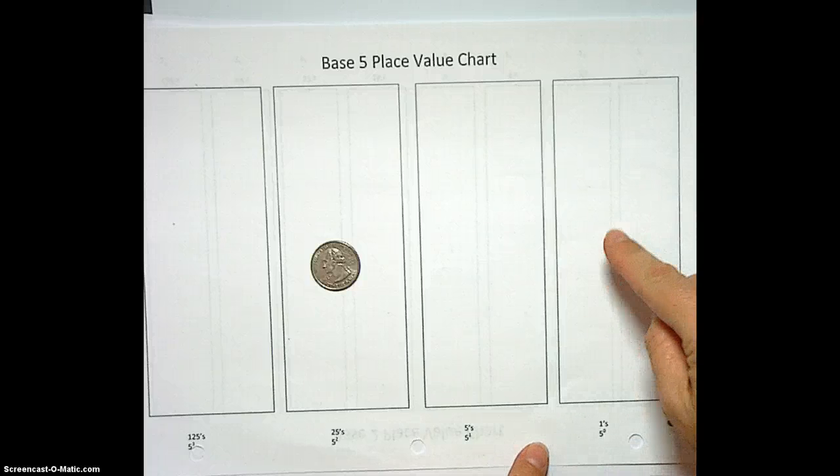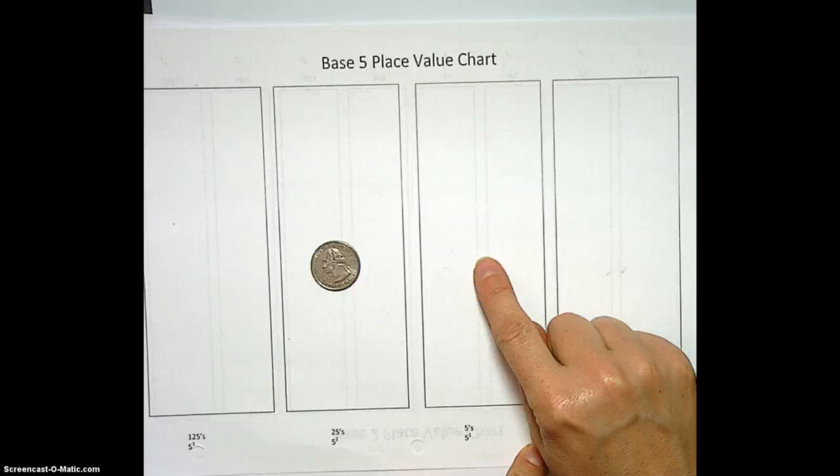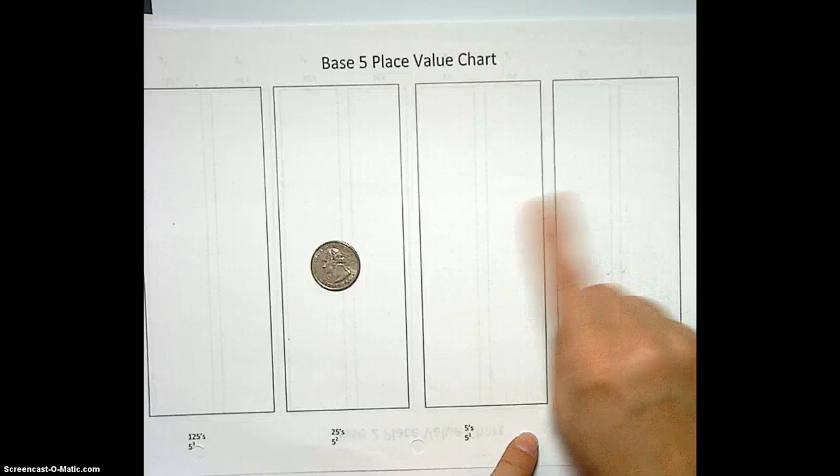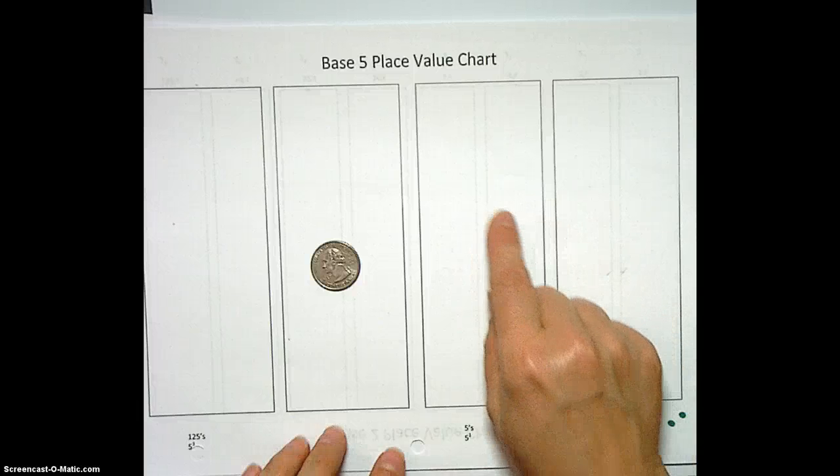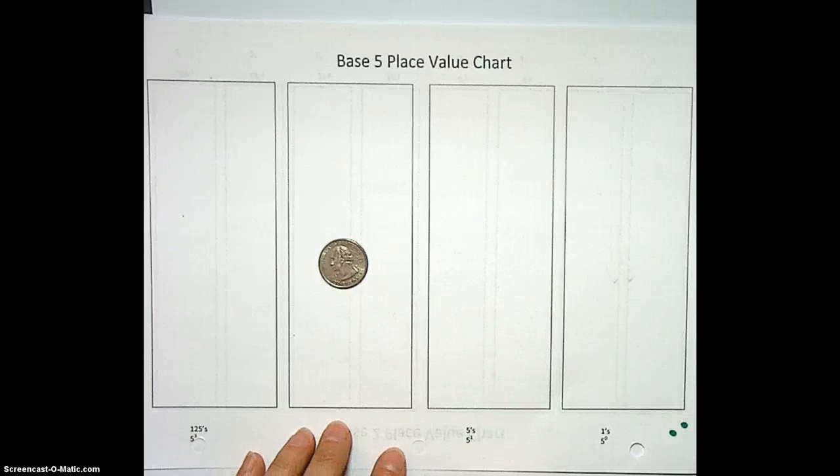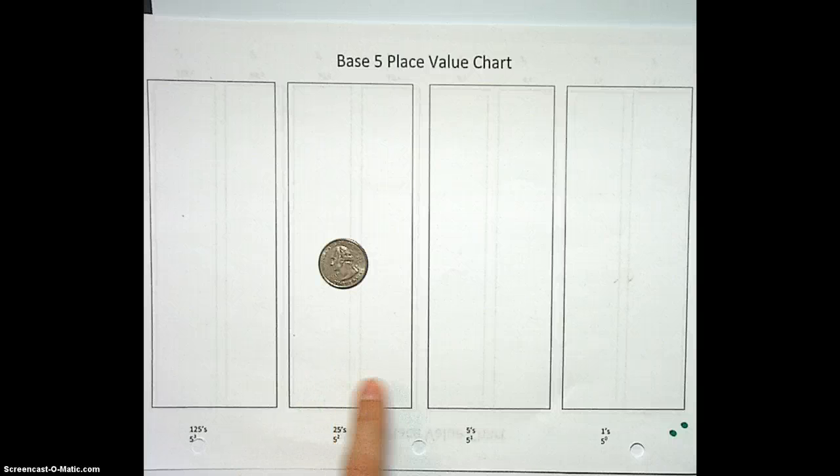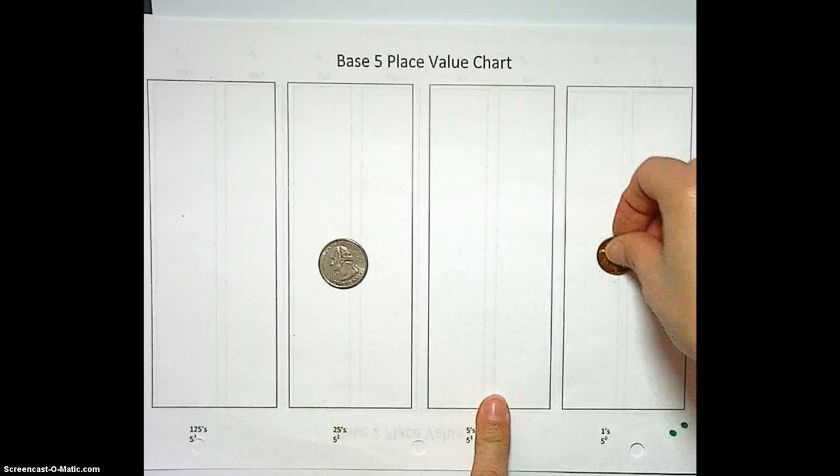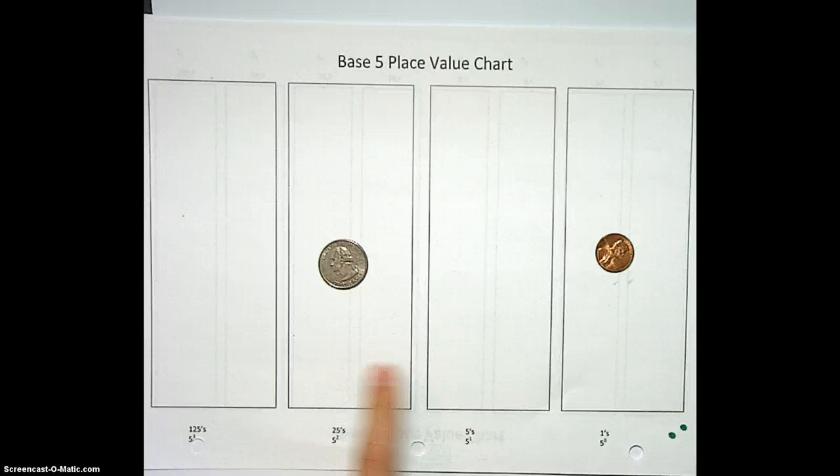So rather than having 25 pennies, we took every group of 5 pennies, traded it in for a nickel, and then we did that 5 times. Then once we got 5 nickels, we traded it in for a quarter. And this is awesome. And then we would keep going. Here we would have 1 quarter, 0 nickels, 1 penny. So 1, 0, 1.